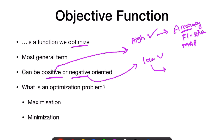Negative oriented means all the loss values, like L1 loss or L2 loss — if the loss value is very low, as low as possible, the model is better.